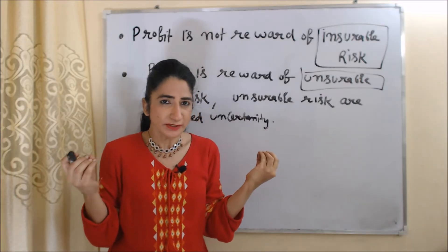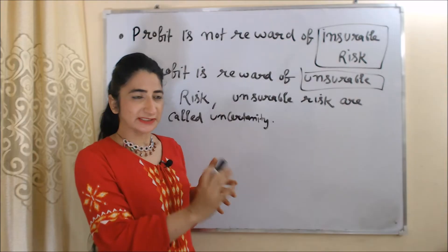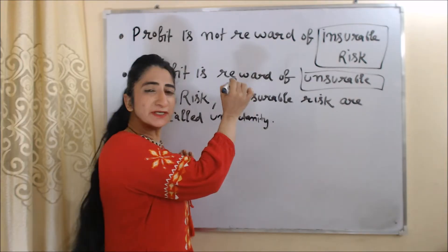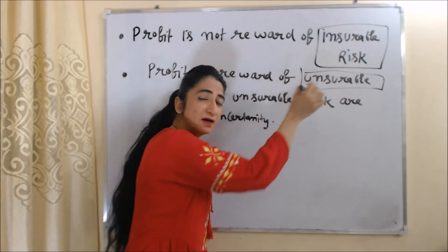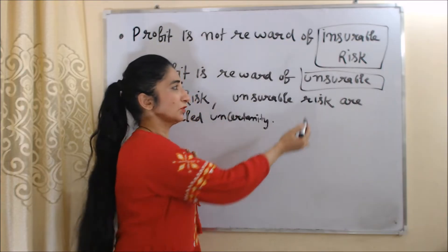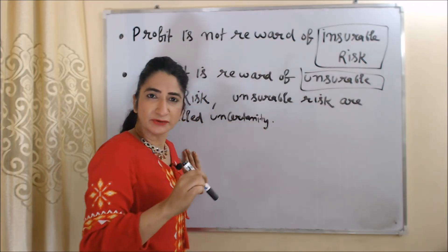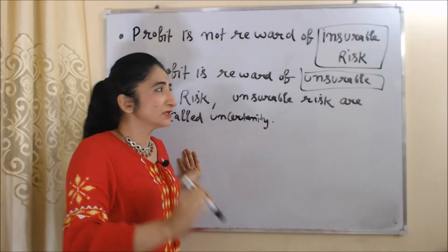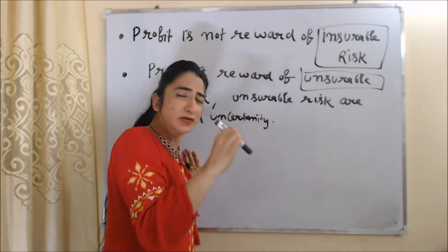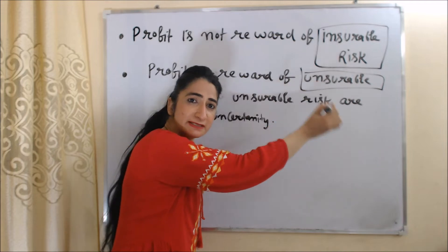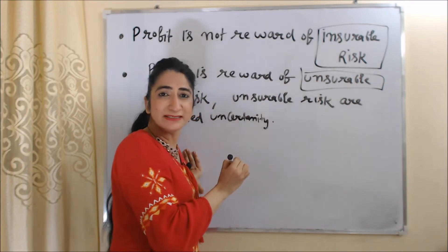One most important thing about this theory: profit is not a reward of insurable risk. Profit is only a reward of uninsurable risk, and uninsurable risks are called uncertainty.